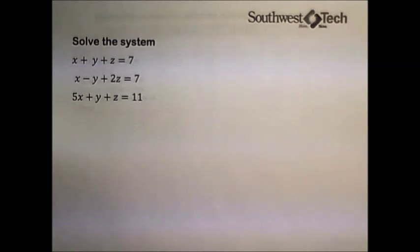Intermediate Algebra, section 3.4, deals with systems of equations in three variables.